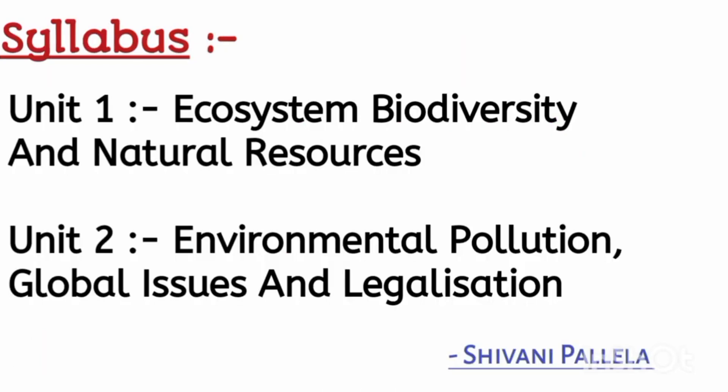You have only two units in this subject. Unit One chapter name is Ecosystem, Biodiversity and Natural Resources. Unit Two chapter name is Environmental Pollution, Global Issues and Legalization. Whatever topics are in these units will be covered in the question paper — for example, global issues, legalization, and causes of environmental pollution.